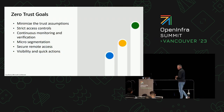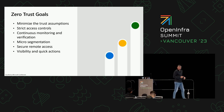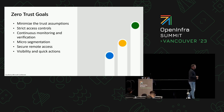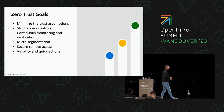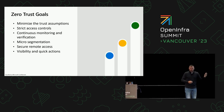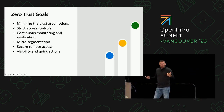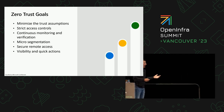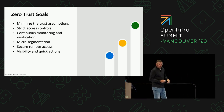What are the goals we're trying to achieve as we start looking at bringing this stuff into AKS? Minimize the trust assumptions, always implement strict access controls, leverage continuous monitoring and verification capabilities, leverage micro-segmentation, implement secure remote access, and provide visibility and quick actions in case something happens.